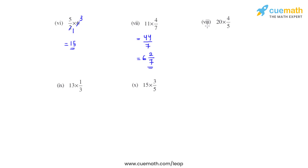Coming to the eighth bit, we have 20 times 4 over 5. On dividing 20 by 5 we get 4 in the numerator. So the answer for the eighth bit will be 4 times 4, which is 16.